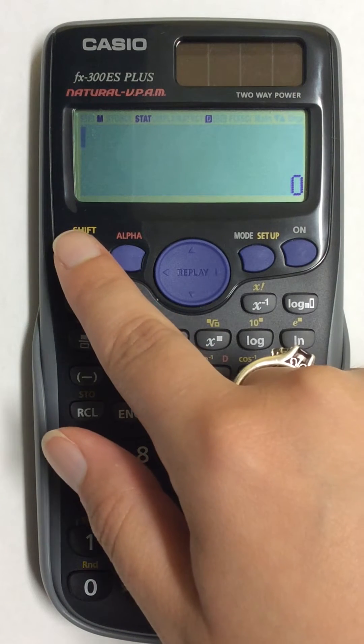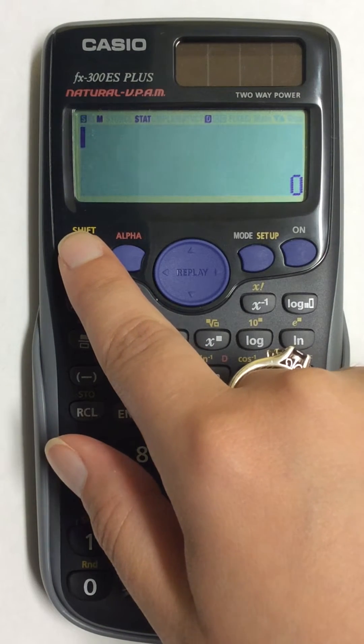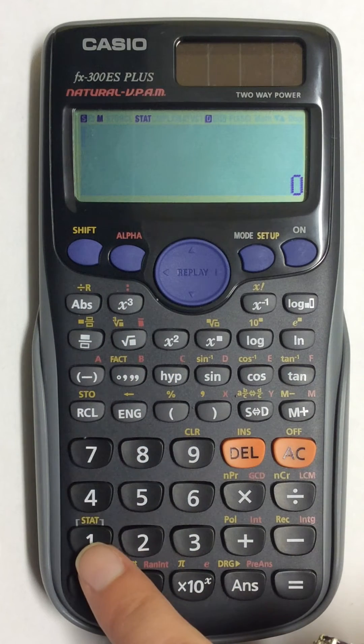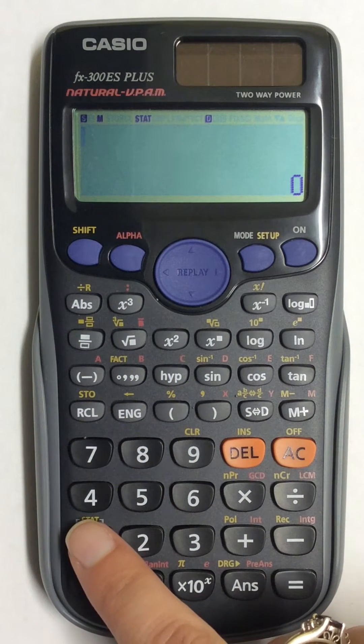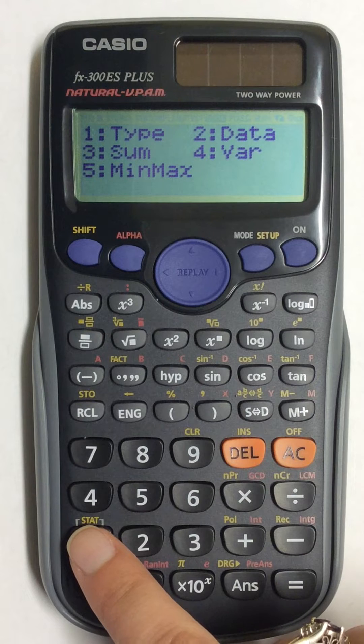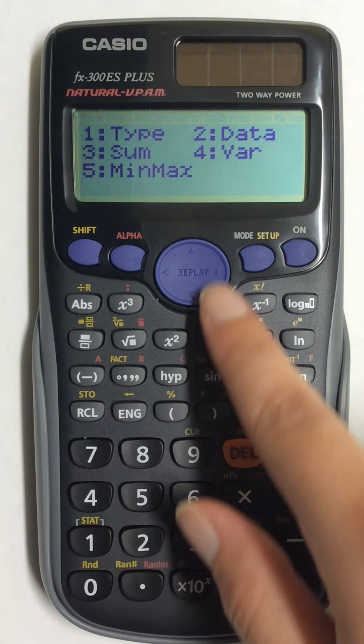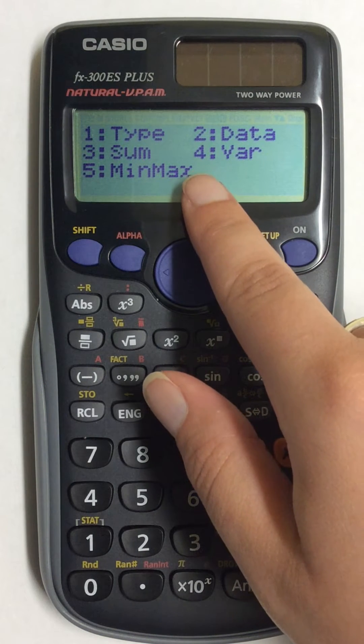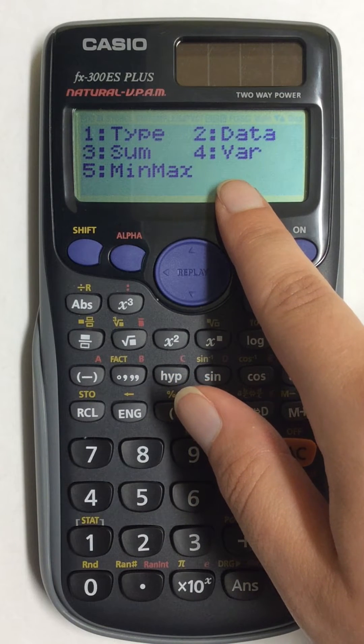I'm now going to press the shift button and come down here to number one which is labeled STAT. Next, I'm going to use option 4, which is VAR.